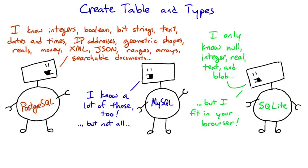For the databases we've used in this course, PostgreSQL has a proper type for dates and times, but SQLite actually just stores dates as strings.